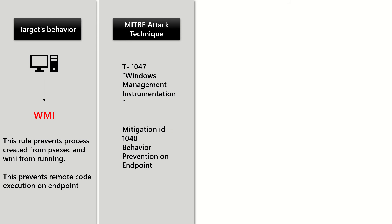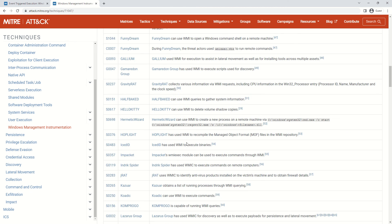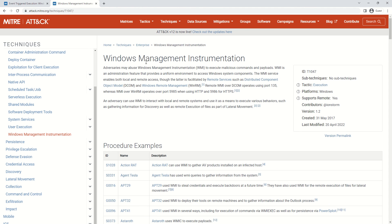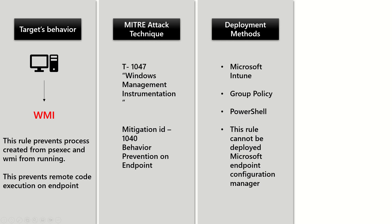From a technique perspective, this is technique 1047, which is related to Windows Management Instrumentation (WMI), and the mitigation ID is 1040. The link will be added in the description — please go ahead and read about this particular technique. From a deployment standpoint, this rule cannot be deployed from Microsoft Endpoint Configuration Manager; however, Intune, Group Policy, and PowerShell can be used.